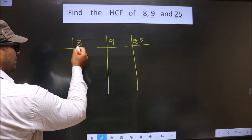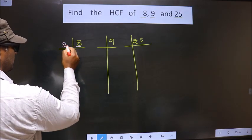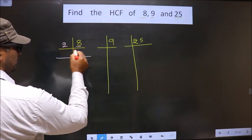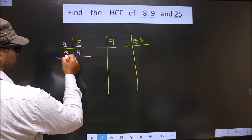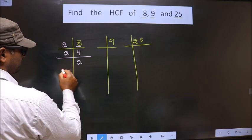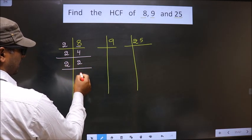Here we have 8. 8 is an even number, so we take 2. When do we get 8 in the 2 times table? 2 times 4 is 8. Here we have 4. 4 is nothing but 2 times 2. Now, 2 is a prime number, so we take 2 and 1.